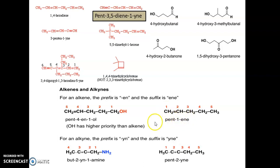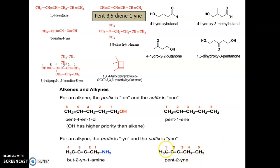For CH2=CH–CH2–CH2–CH3: only one functional group — alkene. Start numbering from the left so carbon 1, 2, 3, 4, 5. Five carbon atoms = pent-, double bond at position 1: pent-1-ene. For CH3–C≡C–CH2–NH2: amine (NH2) gets priority over triple bond. Number from right: 1, 2, 3, 4. But-2-yn-1-amine. For CH3–C≡C–C≡C–CH3: five carbon atoms, triple bond at position 2, pent-2-yne.